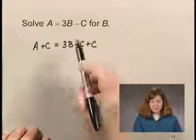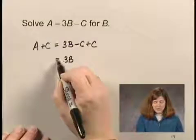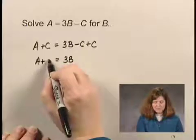And when I do that, I will have 3B by itself on the right side of the equation, and I have A plus C on the left side of the equation.